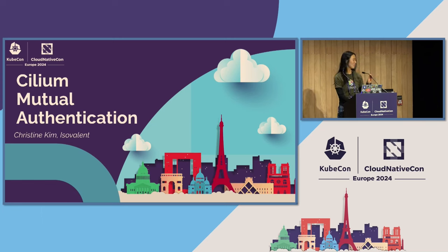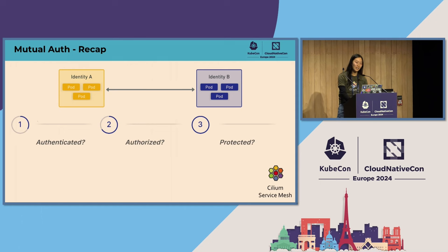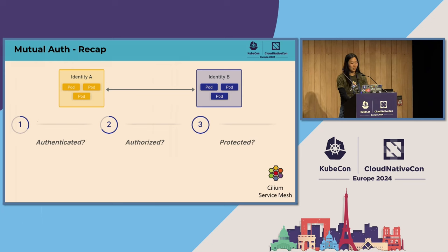I'm going to be talking about Cilium's mutual authentication. This was something the Cilium team introduced a couple of releases ago and a lot of work has gone into it. As a recap, Cilium has the concept of Cilium identities — a set of labels on a pod group that essentially groups workloads together. Using these identities is how Cilium makes policy decisions. Before identity A workloads can communicate with identity B workloads, you want to address some concerns: Are we authenticated? Who are you? Are we authorized — are we even allowed to be communicating? And lastly, is our data protected or encrypted?